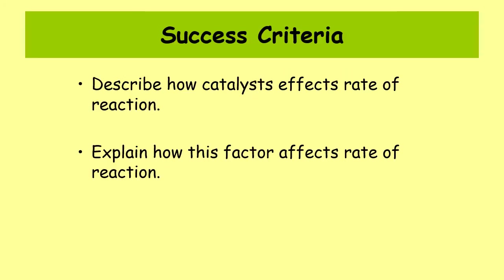You should now be able to describe how a catalyst affects the rate of reaction — specifically that it affects the activation energy, and by lowering the activation energy, catalysts speed up the rate of reaction. You should also be able to distinguish between a homogeneous and a heterogeneous catalyst. A heterogeneous catalyst is usually in a different physical state from the reactants — typically a solid catalyst with gas or liquid reactants. A homogeneous catalyst is in the same physical state as the reactants, usually both liquid.